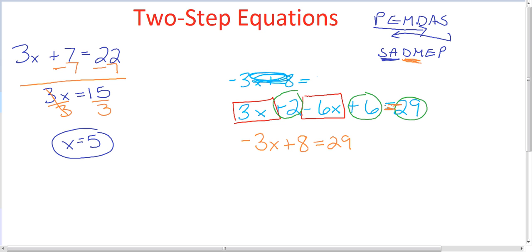Now we're going to undo our subtraction and addition first, so we're going to subtract 8 from both sides. So we have negative 3x equals 21, and we're going to divide by negative 3, and x is going to equal a negative 7.